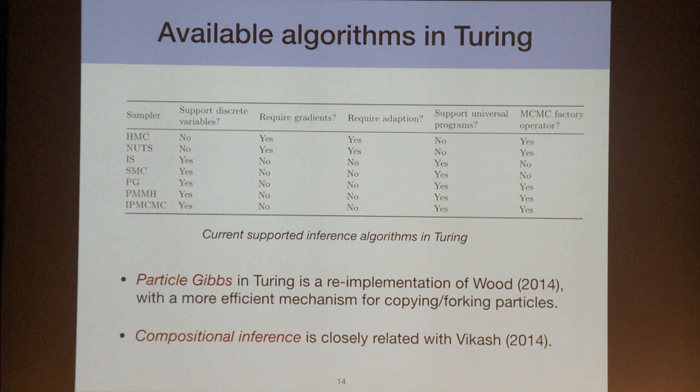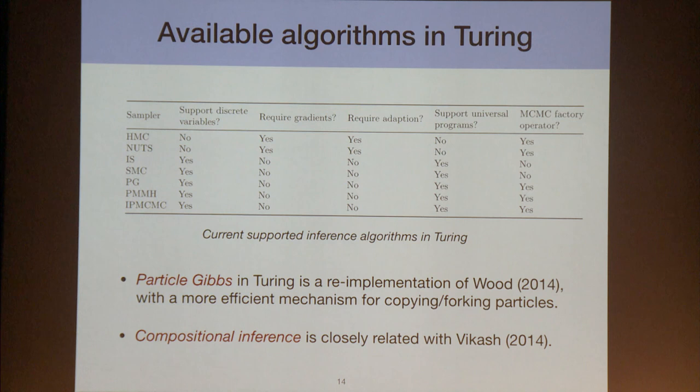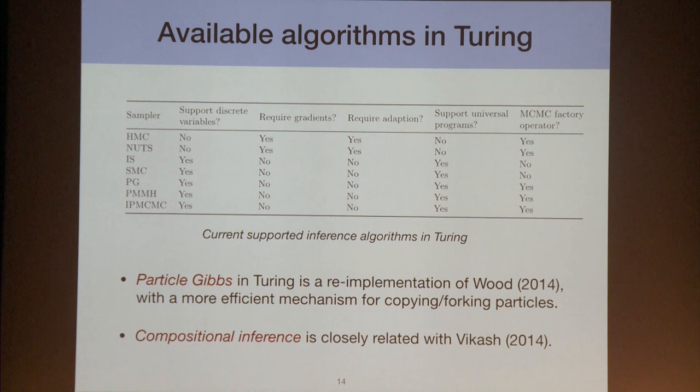Here is a table of currently supported inference algorithms in Turing. The five columns indicate whether a sampler supports discrete variables, whether it uses gradients, whether it requires adaptation (necessary only for the Hamiltonian family of samplers), whether it supports universal probabilistic programs, and whether it can serve as a basic component for compositional inference.